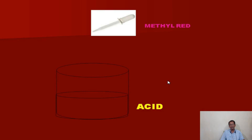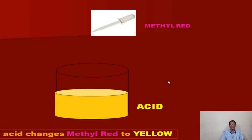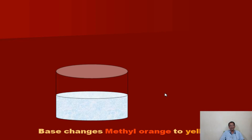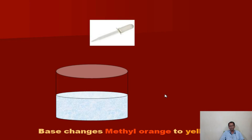Similarly, when methyl red is added to acid, it is changed to yellow. Methyl red changes to yellow in acidic medium. Acid changes methyl red to yellow. Now, what are the other properties of base?